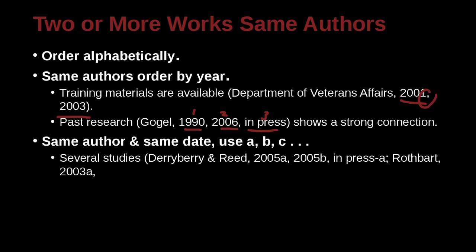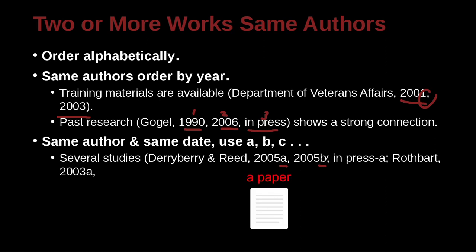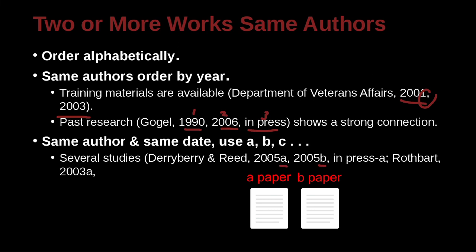What about same author, same date? This has actually happened sometimes. Here we have Derryberry and Reed (2005a, 2005b) — the same authors, the same year. How can we put them together so the reader can actually find each paper? We use the letters A and B. This means one paper is the A paper and the second is the B paper. In our reference list, we also need to specify A and B next to the date. This is just a way to clarify them in the citation and in the references.